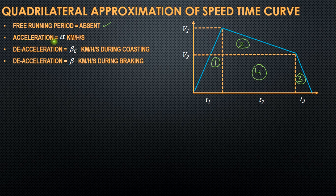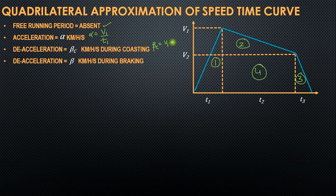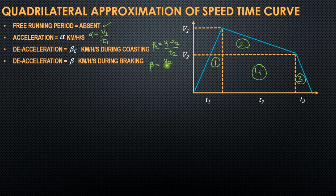In this approximation, the free running period is absent and the acceleration is α kilometres per hour per second. So α can also be written as α = V1 / T1. Similarly, the deceleration during the coasting period is βc in kilometres per hour per second, so βc = (V1 − V2) / T2, because the speed change during the coasting period is V1 − V2 and the time taken is T2. And β, the deceleration during braking in kilometres per hour per second, equals V2 / T3.